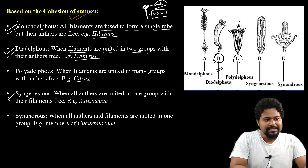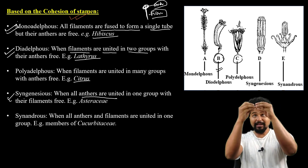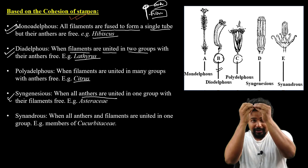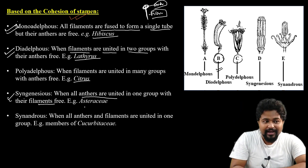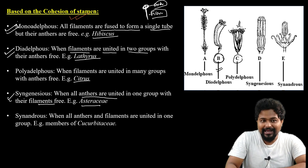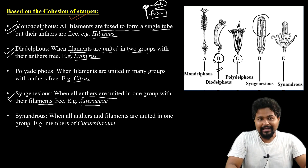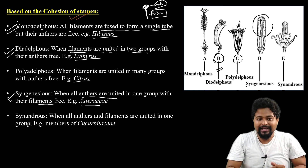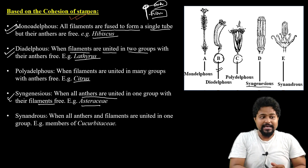Next is syngenesious. When all anthers are united but the filaments are free — in one group with their filaments free — this is called syngenesious. For example, Aster. The anthers are united but the filaments remain free.